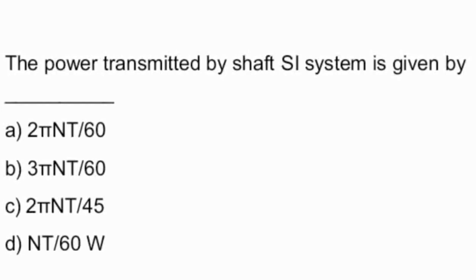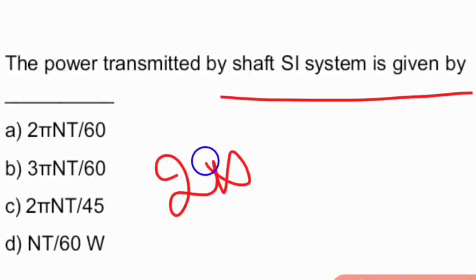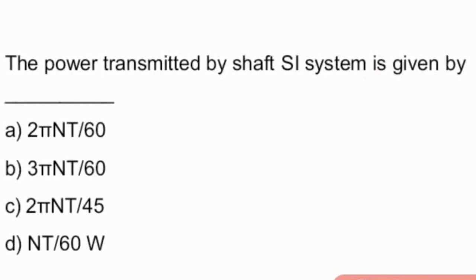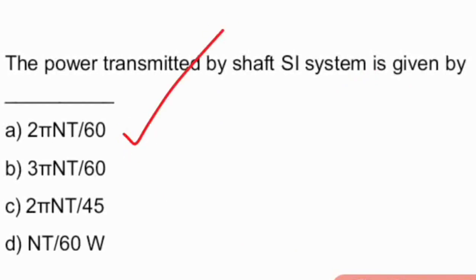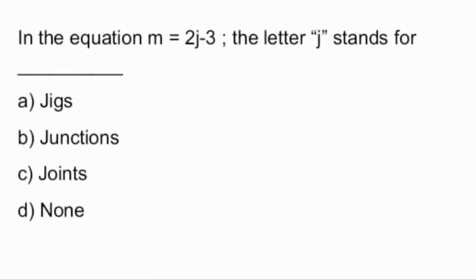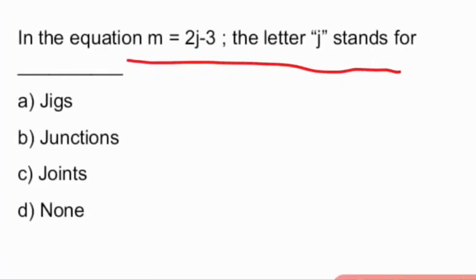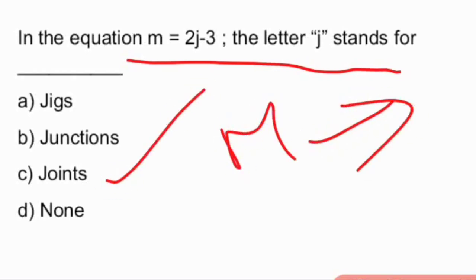The power transmitted by the shaft is given by 2πNT/60 — option A is the right answer. In the equation M = 2J − 3, the letter J stands for joints, whereas M stands for number of members.